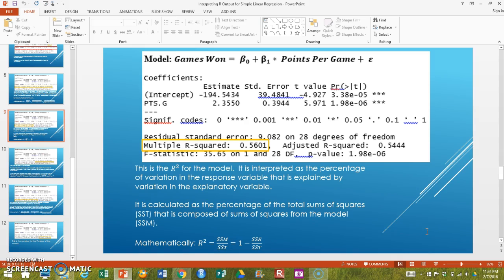In our regression output, the standard R-squared is called the multiple R-squared. As you've seen in the book and in my explanations, we interpret it as the percentage of variation in the response variable that is explained by variation in the explanatory variable. It's simply a ratio of how much of the variation is taken up by our model, sums of squares model, divided by the total variation, sums of squares total.